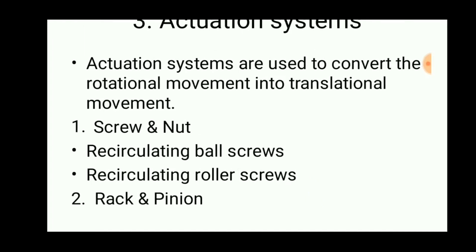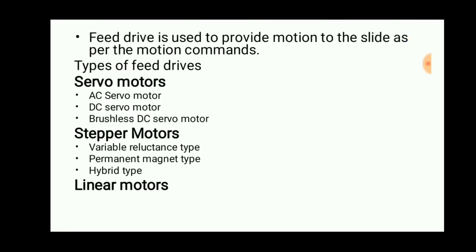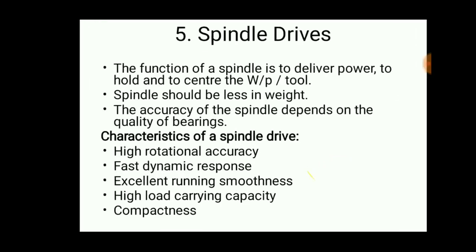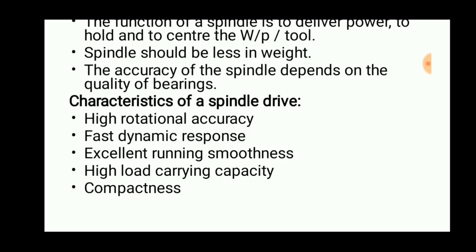Actuation systems are used to convert rotational movement into translational movement using screws and nuts, such as recirculating ball screws, recirculating roller screws, and rack and pinion. Feed drives provide motion and include servo motors, stepper motors, and linear motors. Servo motors include AC, DC, and brushless DC types. Stepper motors include variable reluctance, permanent magnet, and hybrid types. Spindle drives deliver power to hold and center the workpiece or tool in the machine table. The spindle should be light in weight, and its accuracy depends on the quality of the bearings.